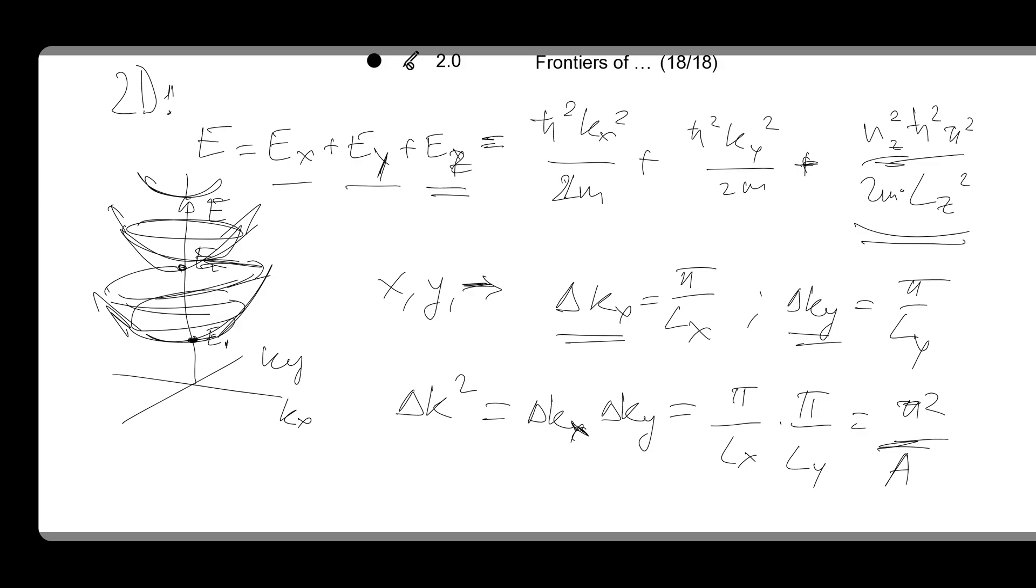And the number of states available for a given magnitude of the wave vector will be done, in analogy with the three-dimensional case, by constructing a ring of some radius k, where k is the wave vector and the thickness of dk, rather than a spherical shell from the 3D case.